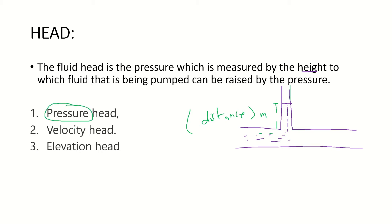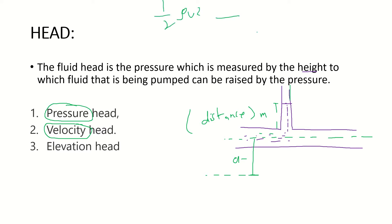Just as pressure is converted to pressure head, kinetic energy is converted to velocity head, and elevation is converted to elevation head. The elevation head is simply the distance from the datum or reference point to the centerline of the pipe. The velocity head is the conversion of kinetic energy — one half rho v squared — into an equivalent column height. Similarly, pressure is also converted into a corresponding column height.